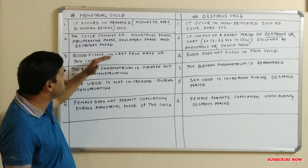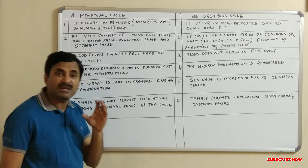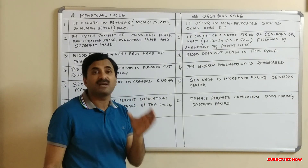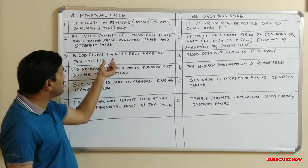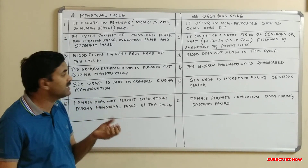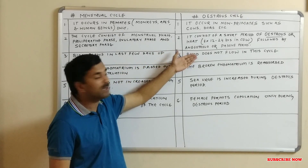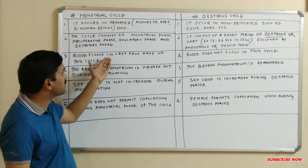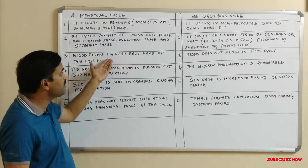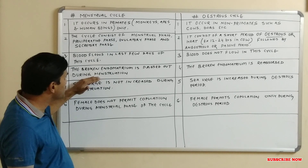The third difference is that in the menstrual cycle, blood flows during the last few days of the cycle — specifically three to five days. As soon as one cycle ends, a new menstrual cycle starts. However, in the estrous cycle, blood does not flow. In the menstrual cycle, menstruation occurs continuously after every 28 days and the female bleeds for three to five days.